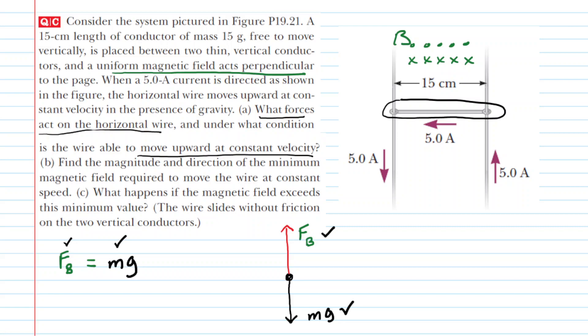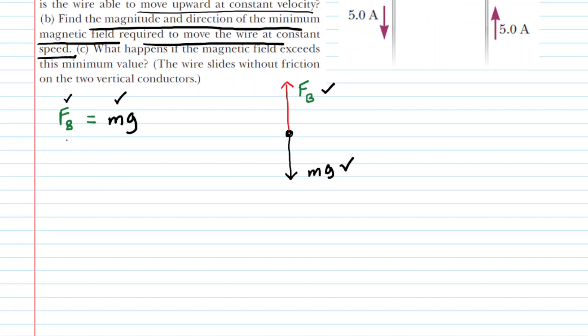We can move on to part B of the question which asks us to find the magnitude and direction of the minimum magnetic field required to move the wire at constant speed. Well fortunately we can build off of our previous statement because we know that the magnetic force on a conductor is equal to the current in the conductor multiplied by the length of that conductor multiplied by the magnetic field strength multiplied by the sine of an angle which we will talk about momentarily.